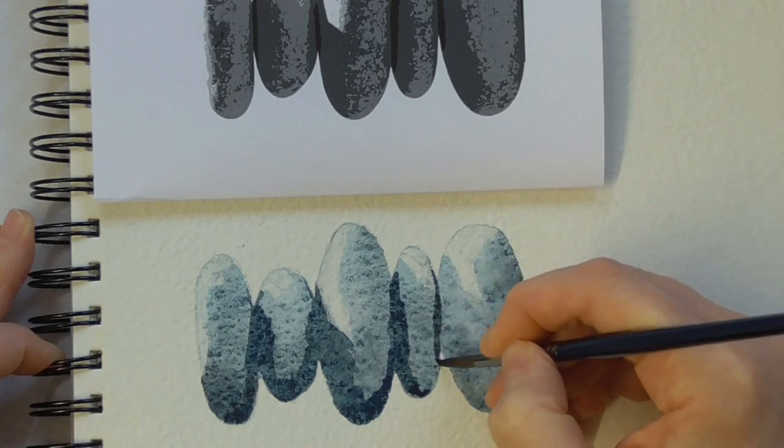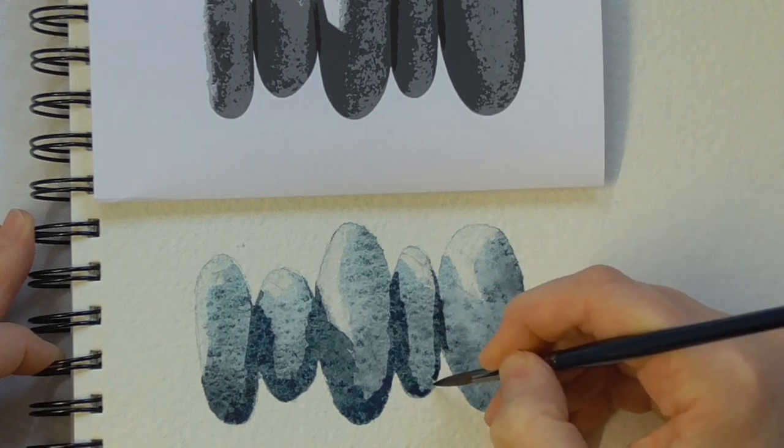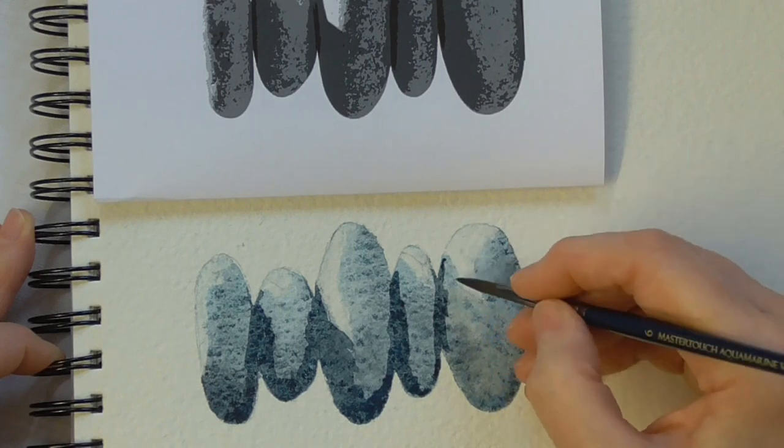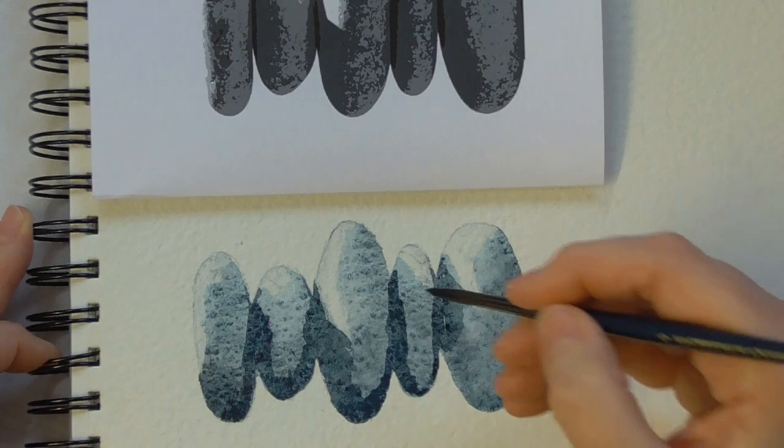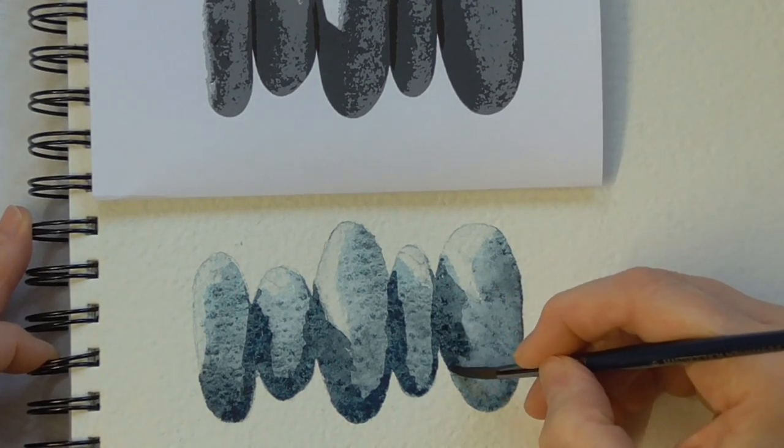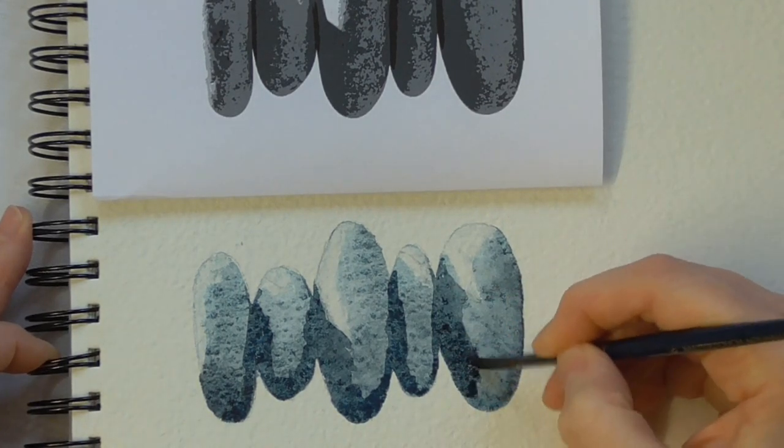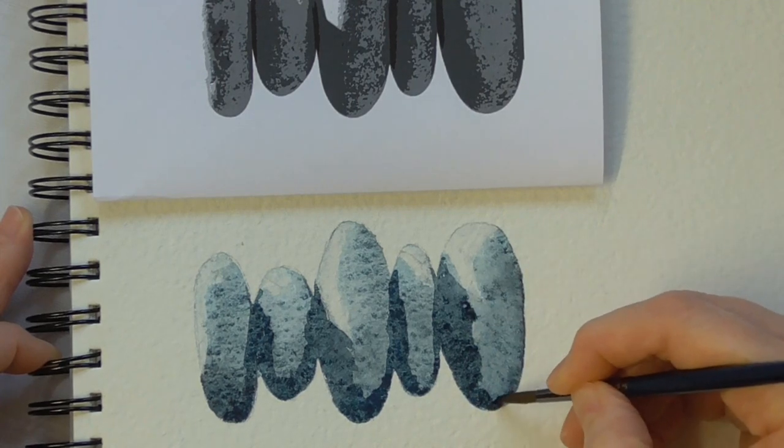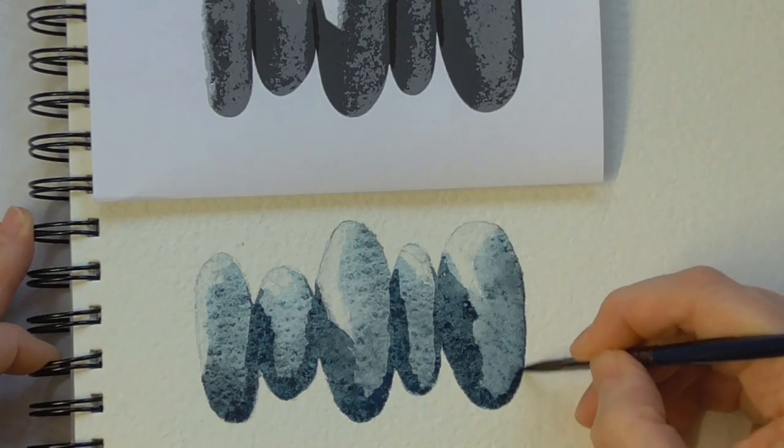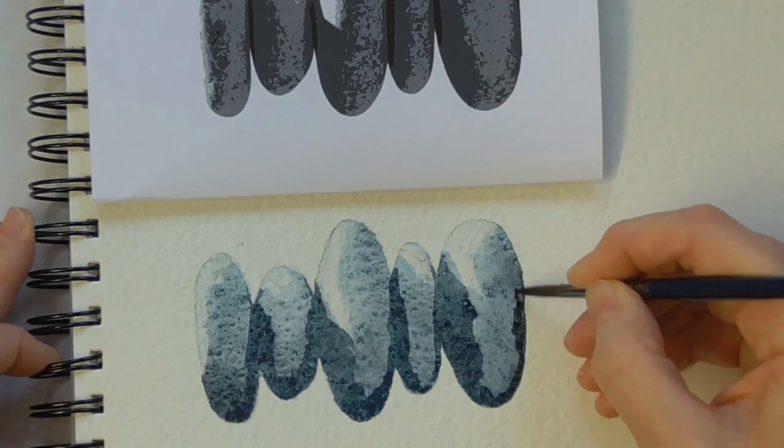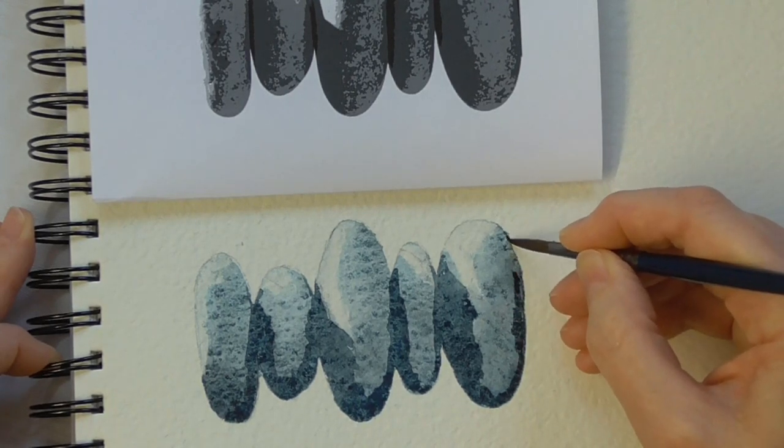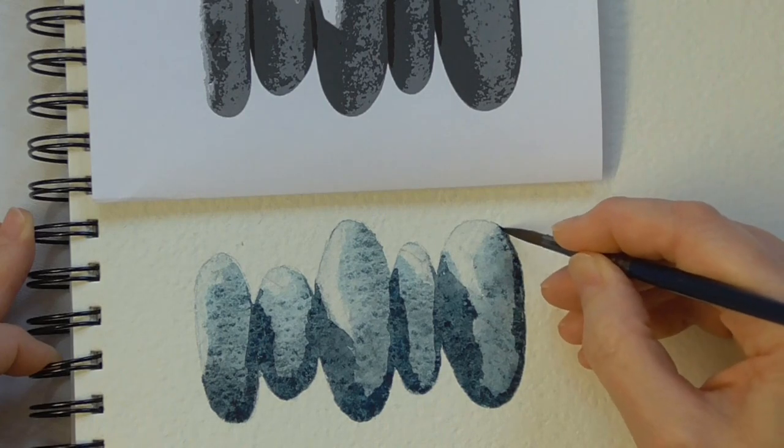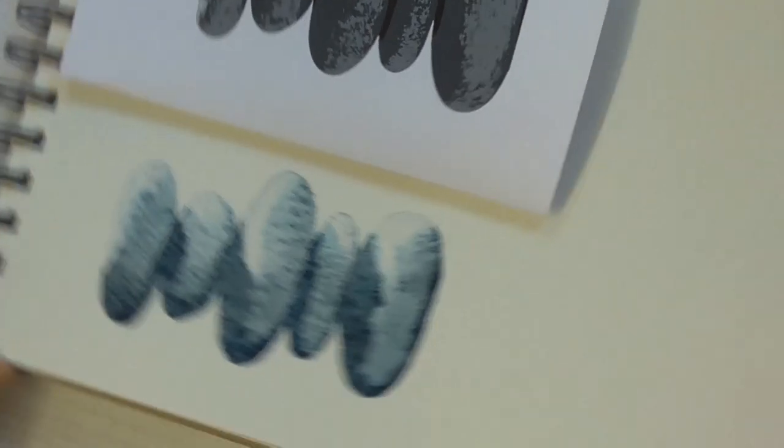As you can see, I'm putting these extra tonal darks on the pebble to show where the light is not reaching. This shows us that some pebbles are on top of the other pebbles. Because we've already got some tone on, some color on from the previous washes, the pebbles now are developing in their 3D quality.